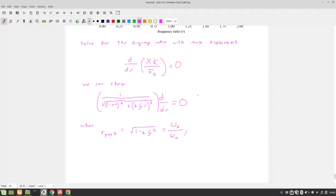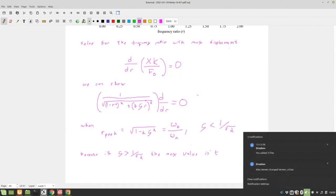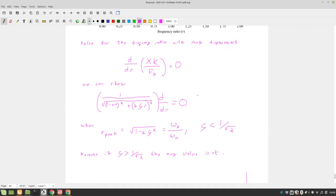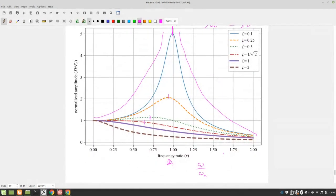However, this is only for ζ is less than 1/sqrt(2). Because if ζ is greater than 1/sqrt(2), the maximum imaginary peak, the maximum value is at. So if we have ζ that's less, like for these here. Sorry, if we have ζ that's greater, where is our maximum value for these high damping considerations? Zero. Zero, yeah.